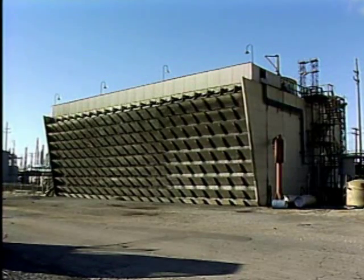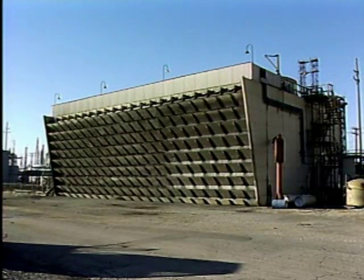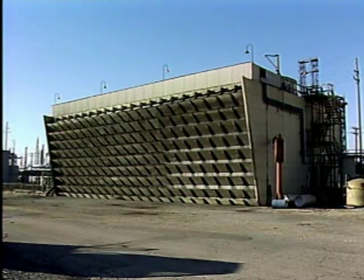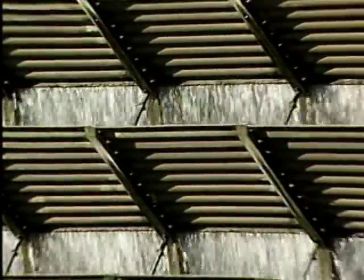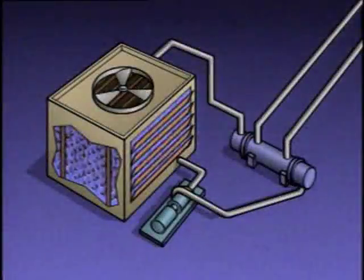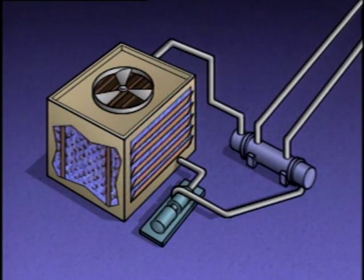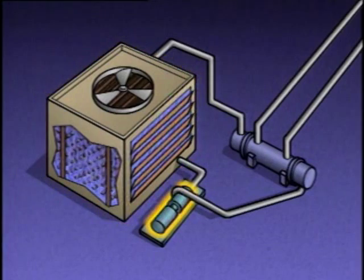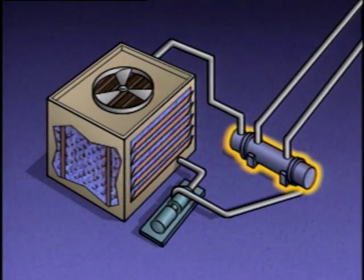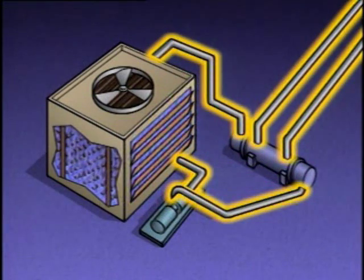Cooling towers are often used as part of a cooling water system in a facility. The system may be used to cool many different components and process fluids. This illustration shows a simplified system that includes a cooling tower, a circulating pump, a shell and tube heat exchanger, and fluid lines.